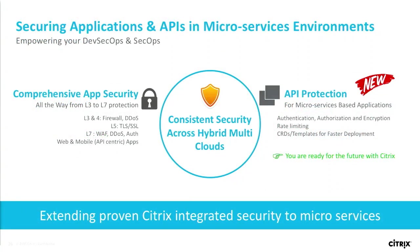Security is not an afterthought. We bring the richness of our comprehensive application security, which we have used for many years, now extending to microservices-based applications with the same common interface. We are also adding API protection because all microservices speak to each other through APIs and we live in the API economy. We now offer API protection where you can rate-limit the APIs, protect against DDoS, and more. If you go with Citrix, you can protect not just three-tier web applications but also microservices-based applications.